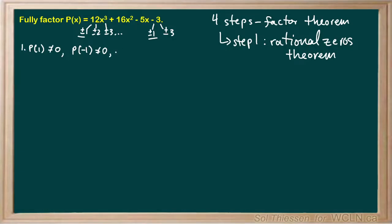So P of positive 1 half to start is going to be 12 times 1 half cubed plus 16 times 1 half squared minus 5 times 1 half minus 3. So 1 half cubed gives us 1 over 8, 12 over 8 gives us 3 over 2 if we reduce by a factor of 4. We have plus 16 times 1 quarter, or 16 over 4, which is just equal to 4. And we have minus 5 halves minus 3.